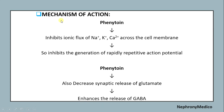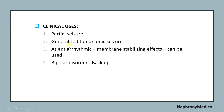Mechanism of action of phenytoin: it inhibits ionic flux of sodium, potassium, and calcium across the cell membrane, so it inhibits regeneration of rapidly repetitive action potentials. Phenytoin finally decreases synaptic release of glutamate and enhances the release of GABA. Clinical uses include partial seizure, generalized tonic-clonic seizure, as an anti-arrhythmic, and in bipolar disorder as a backup.